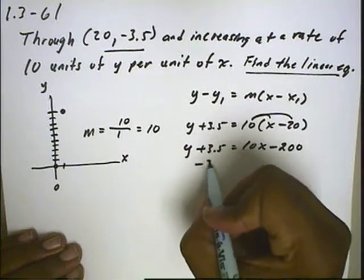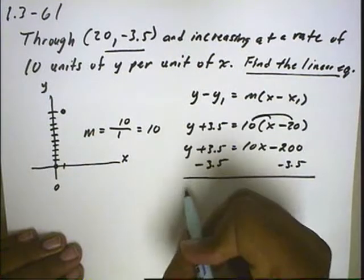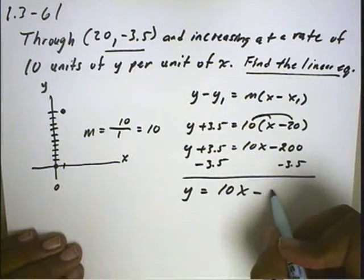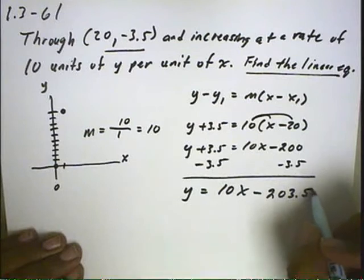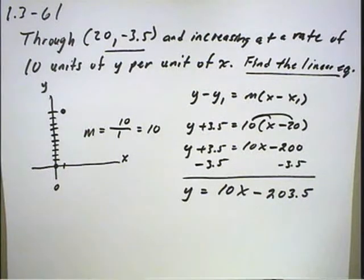And then we'll subtract the 3.5 from both sides, and we'll end up with y equals 10x minus 203.5. And this will be the linear equation that we're looking for.